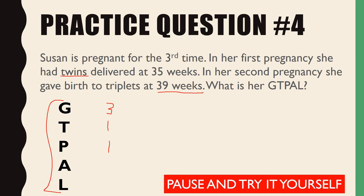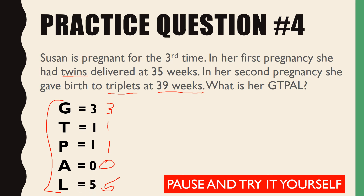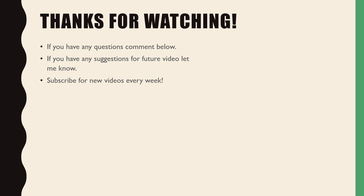Nothing mentioned about abortions, so A = 0. Finally, Living counts by individual fetuses: the twins from the first pregnancy are 2, the triplets from the second are 3. Nothing mentioned about any of them passing away, so 2 + 3 = 5, L = 5. Final answer: G3 T1 P1 A0 L5 — correct! Thank you for watching. If you have any questions, comment below. Subscribe for new videos every week.